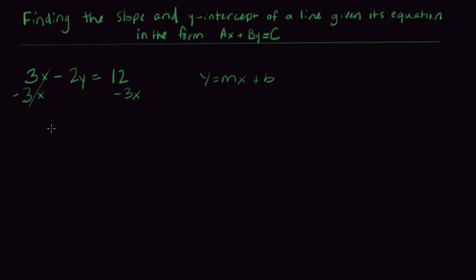So on the left hand side we'll just have negative 2y and on the right hand side we'll have 12 minus 3x, or to write it better we would have negative 3x plus 12.